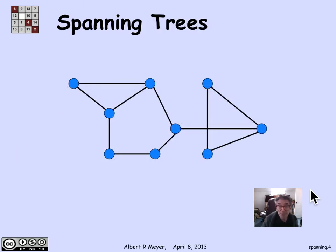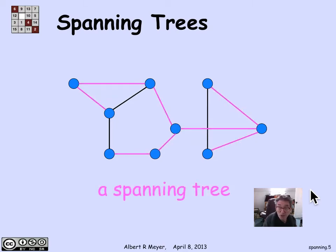Here's a simple graph. What I want is a spanning tree — a selection of edges that connect up all the vertices such that we're only using edges in the original graph and they form a tree. There it is. The magenta edges I've highlighted define a tree. I haven't used three of the edges in the original graph.